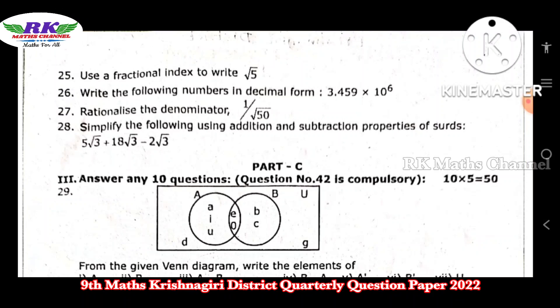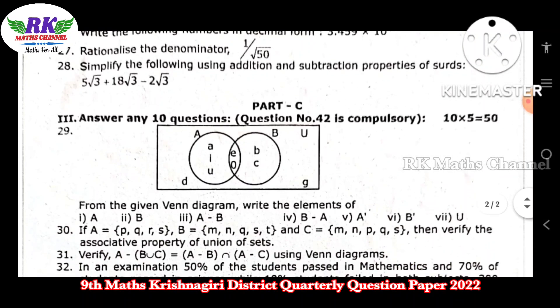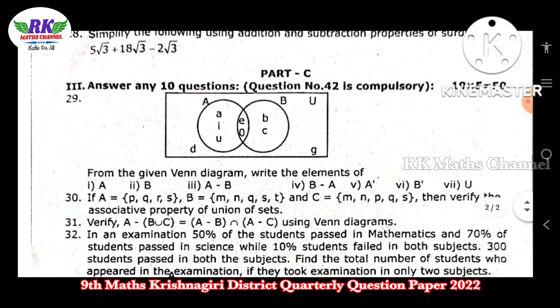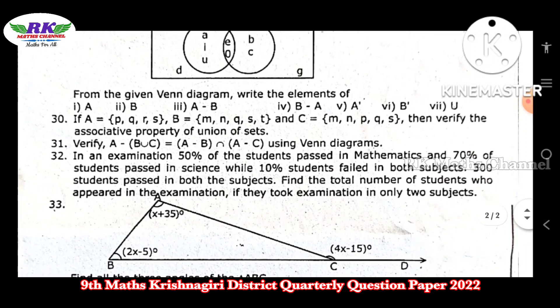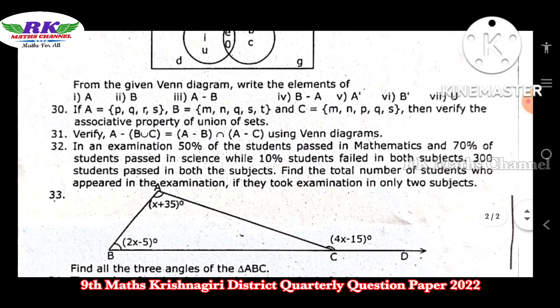Next Part C has 5 mark questions. 10 questions total, attempt any 5 for 25 marks total. Question number 29 onwards uses a Venn diagram. You need to verify the associative property of union of sets using Venn diagrams.